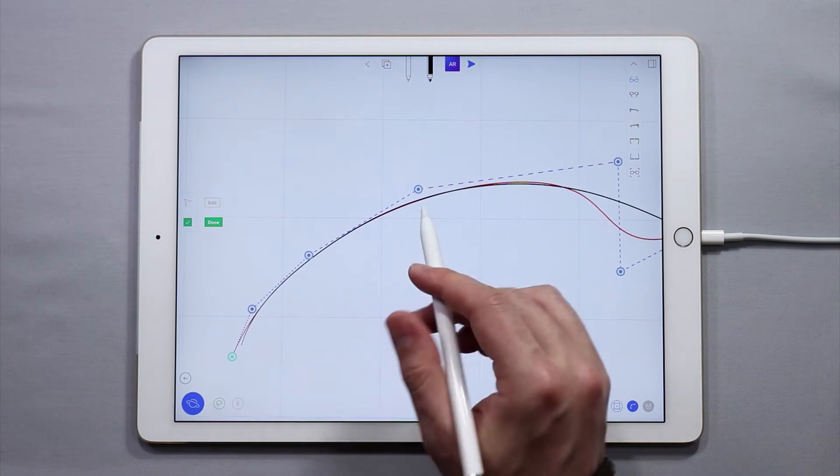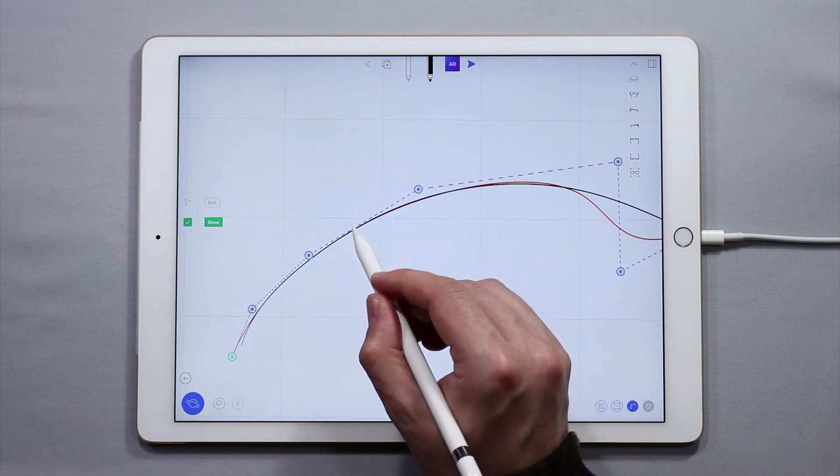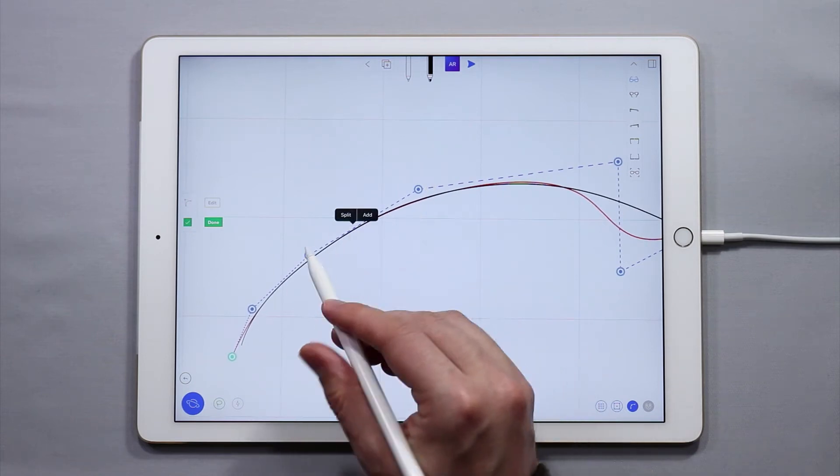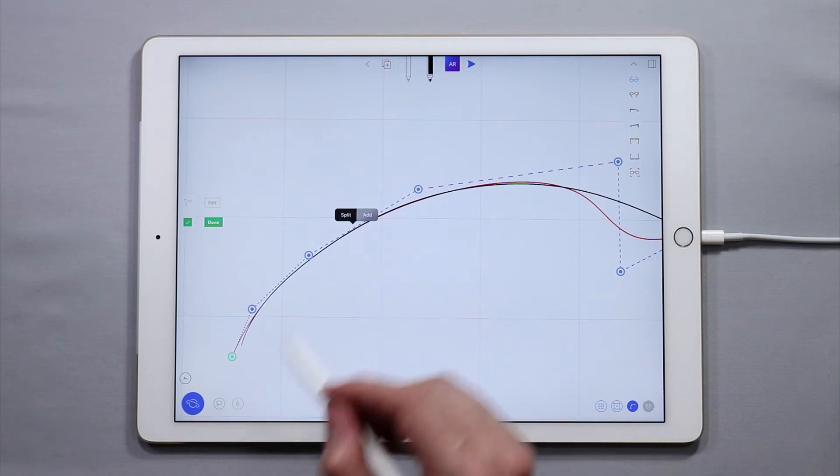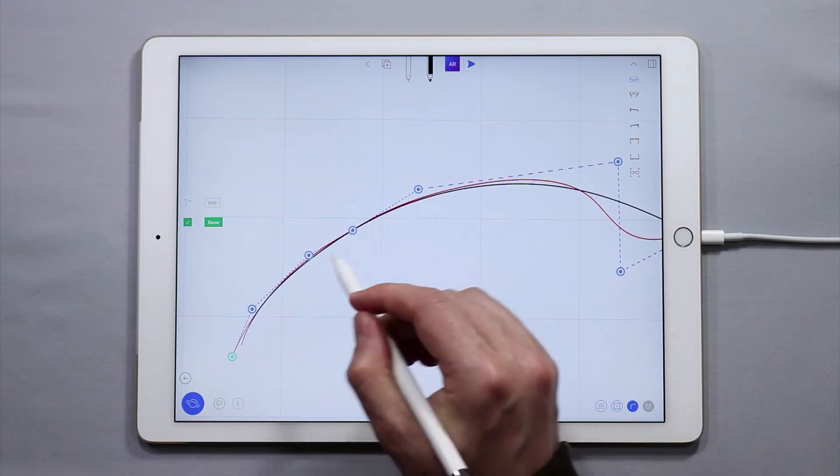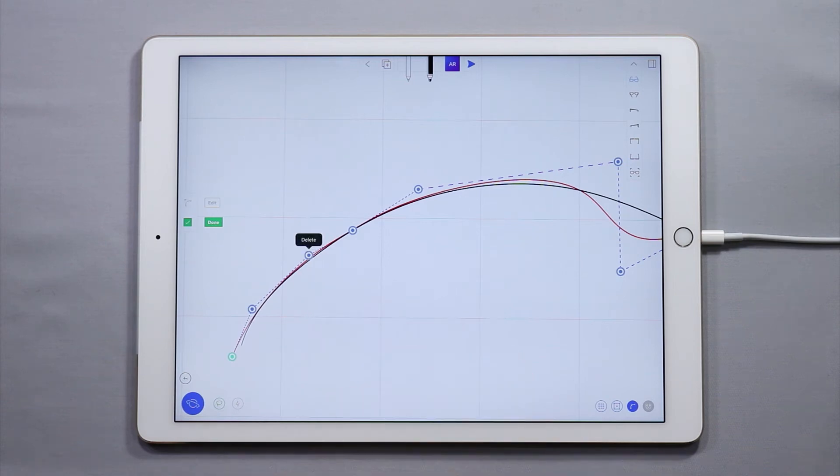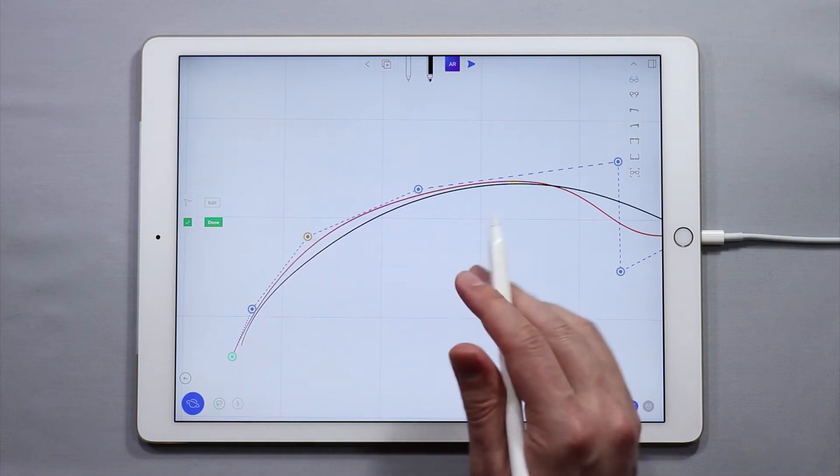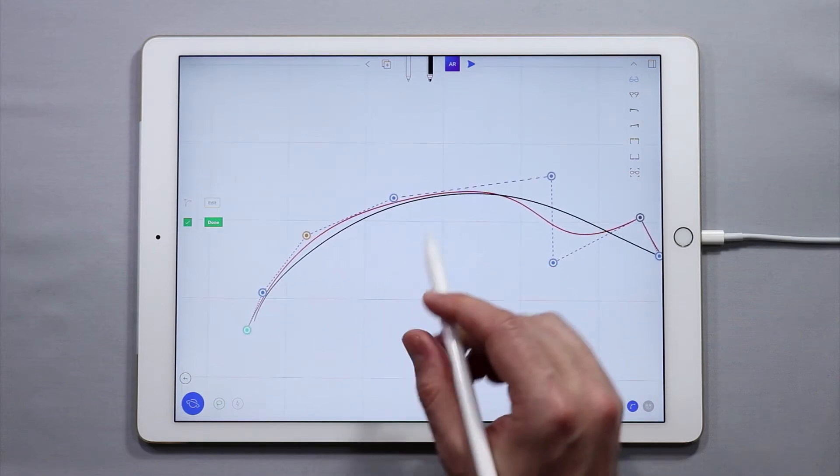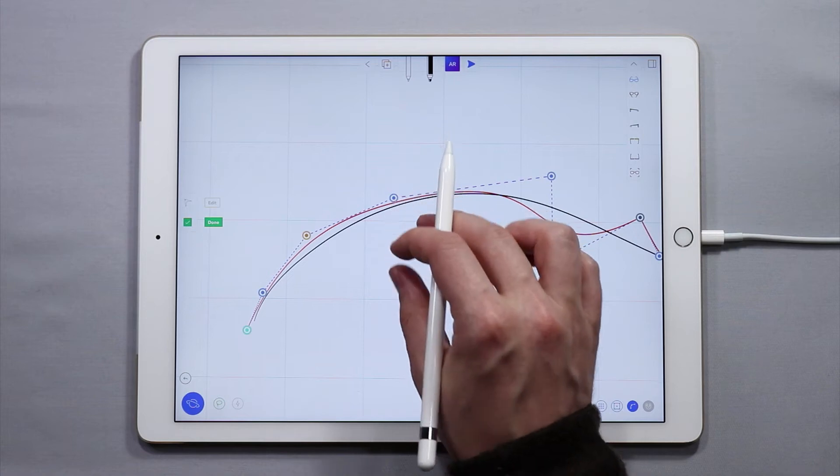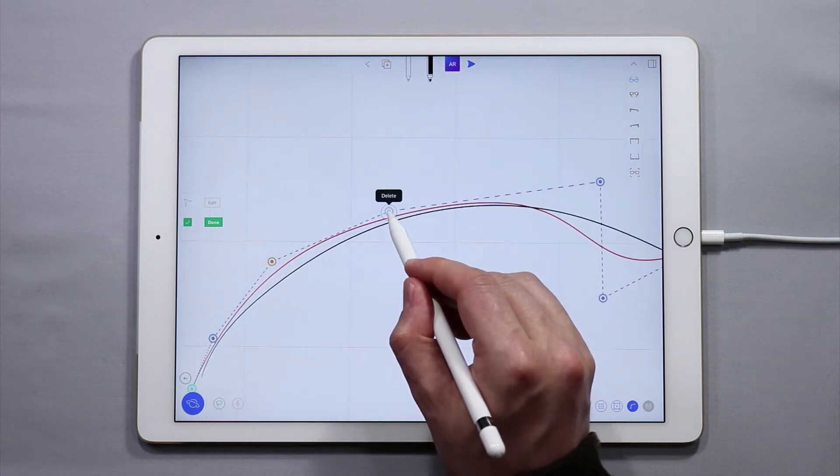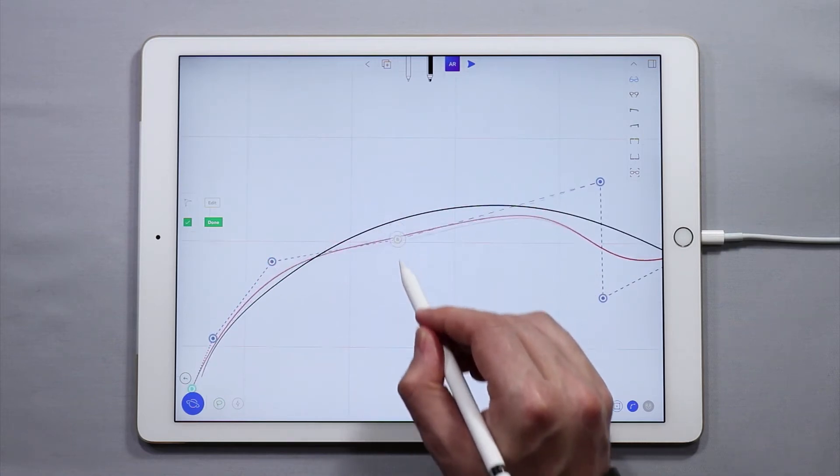Now if I want to add control points I simply have to tap and hold close to a curve and I have the option to add a control point. If I want to get rid of a control point simply tap and hold on any control point and then tap delete. That'll delete the control point. To move as I've shown before simply tap on any control point and drag and this will move the point.